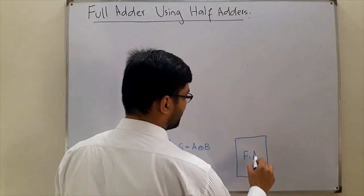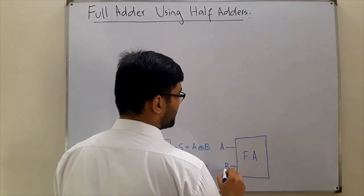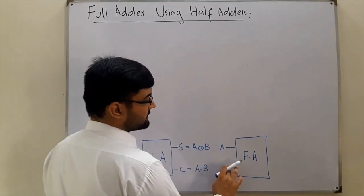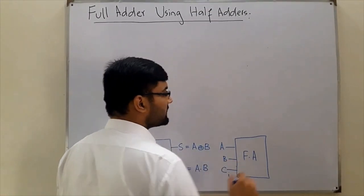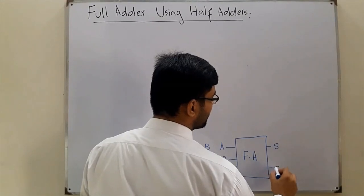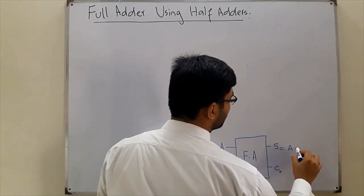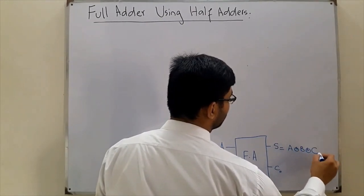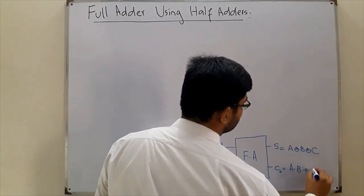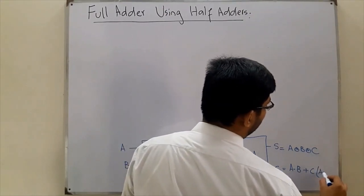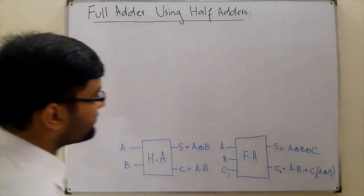For the full adder, we have three inputs: A, B, and C-in. The outputs are sum and carry-out. Sum is equal to A XOR B XOR C-in. The carry output is A AND B plus C-in times A XOR B. We've seen this from the previous videos.